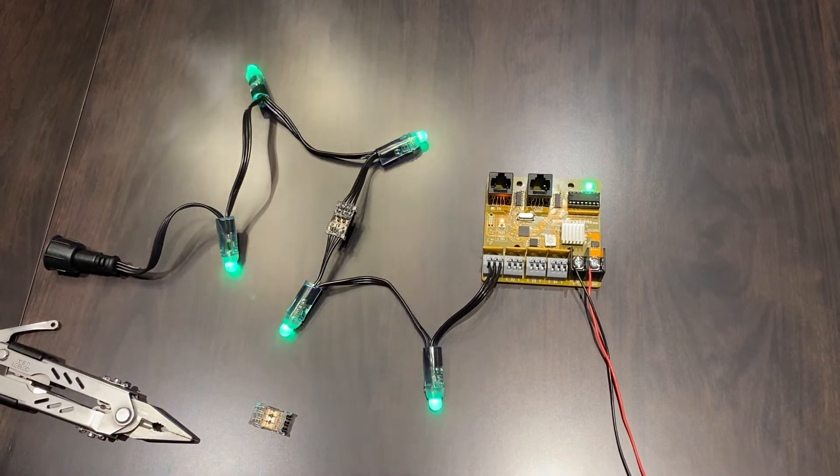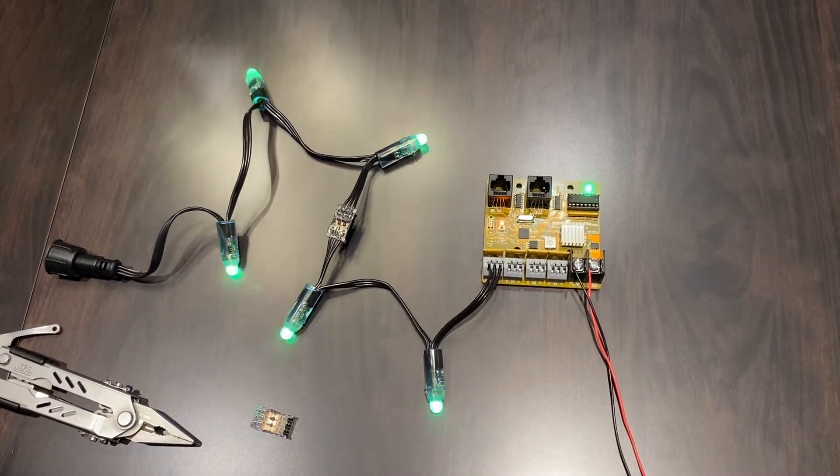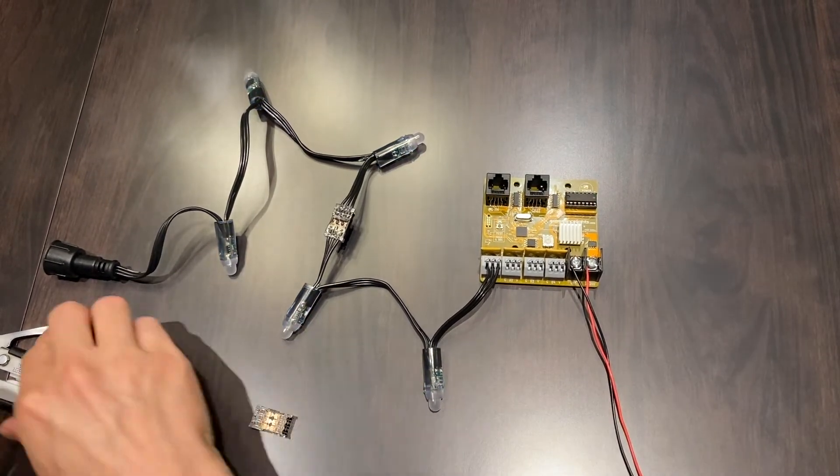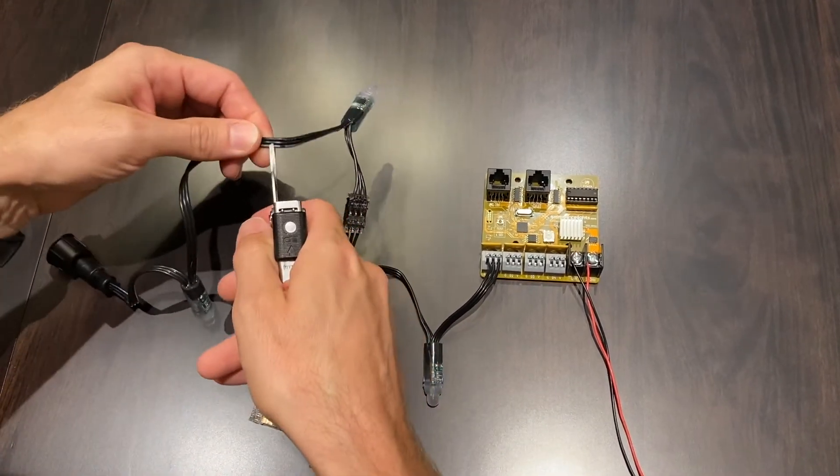So what we've got here is a string of pixels hooked up to one of our Genius receivers, and we're going to do a repair. So shut off the power first, just make a cut in these wires.